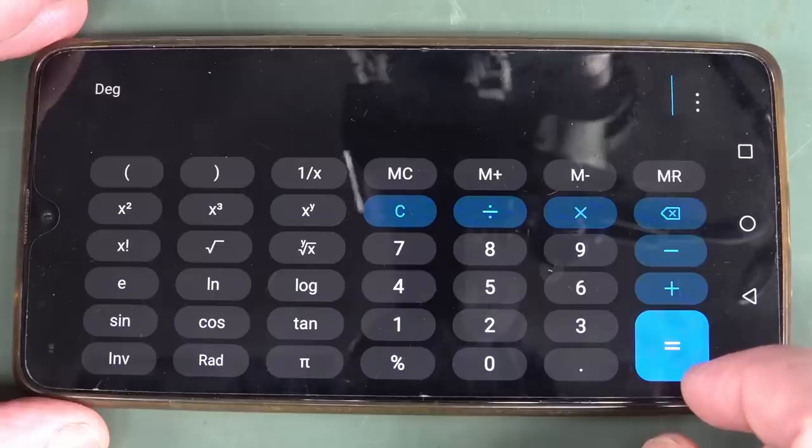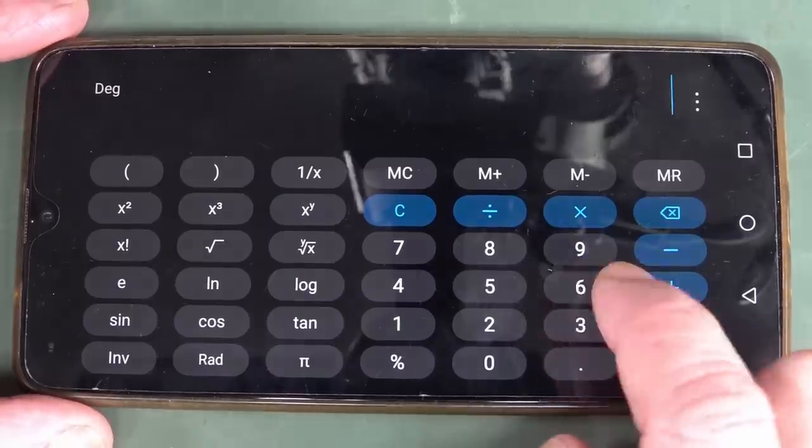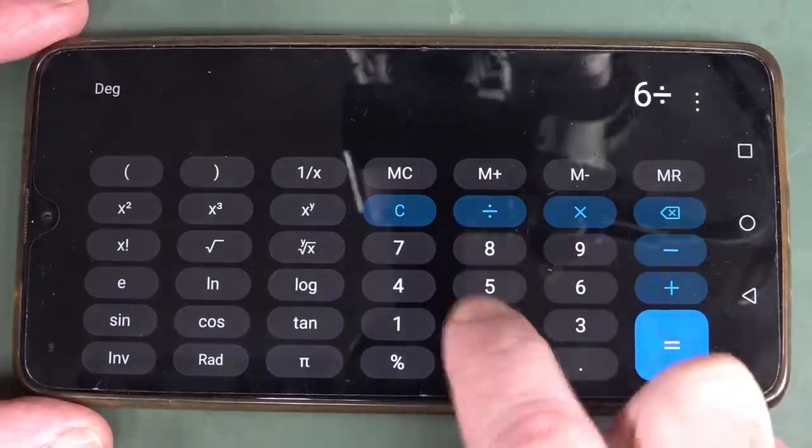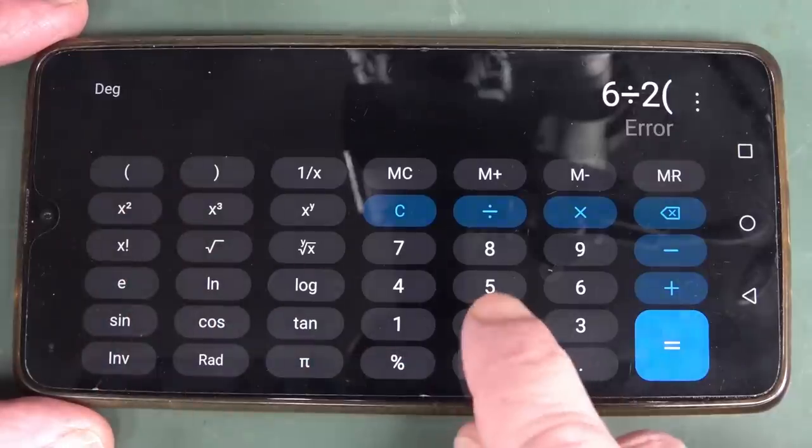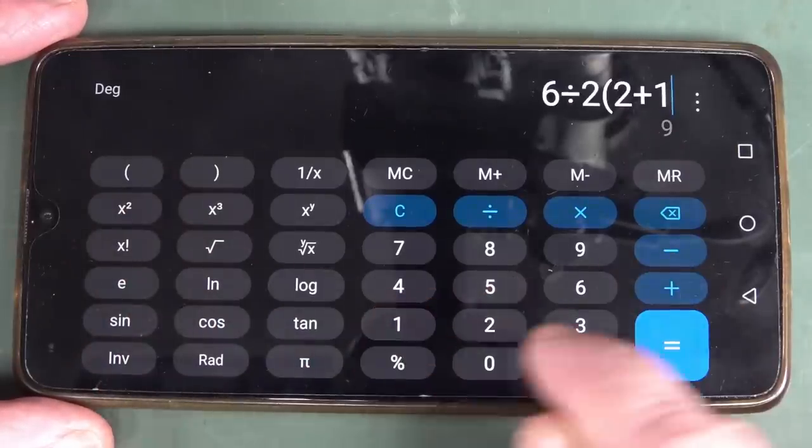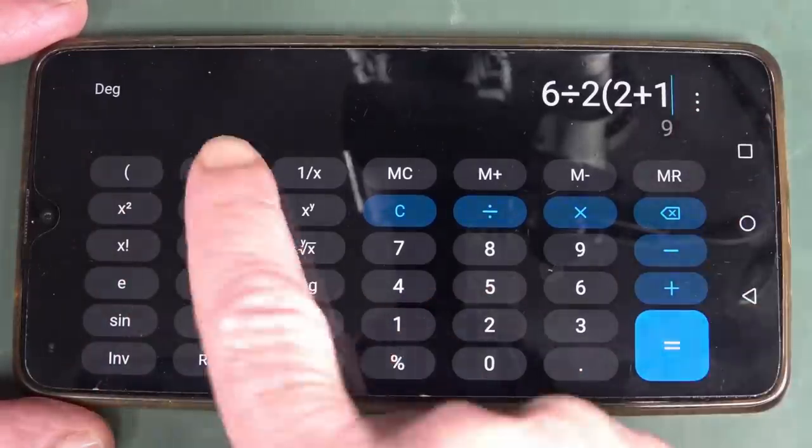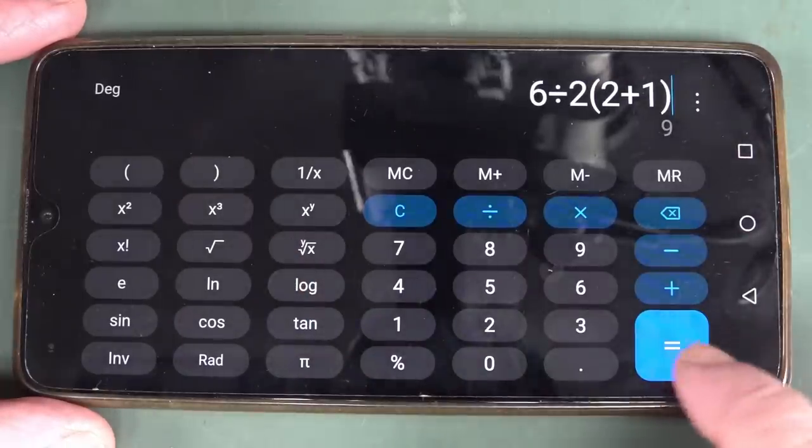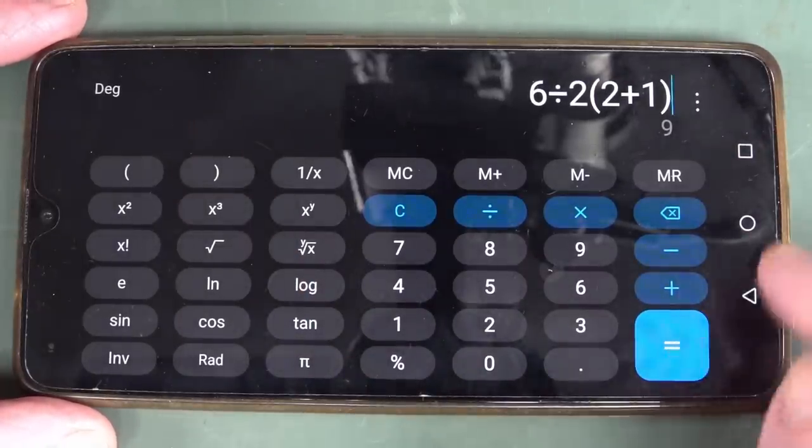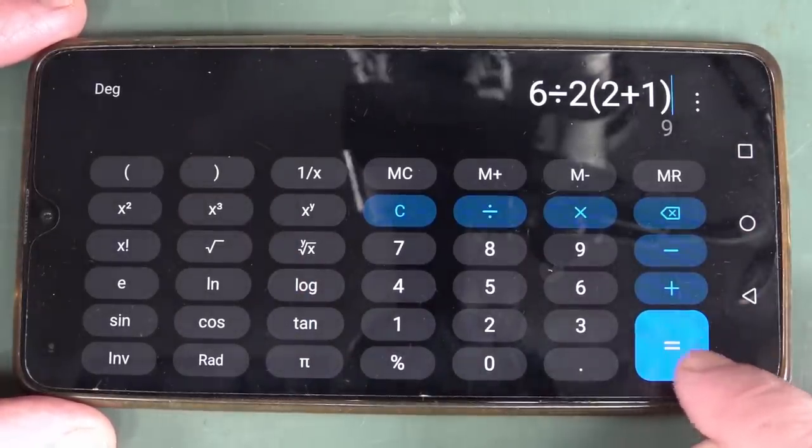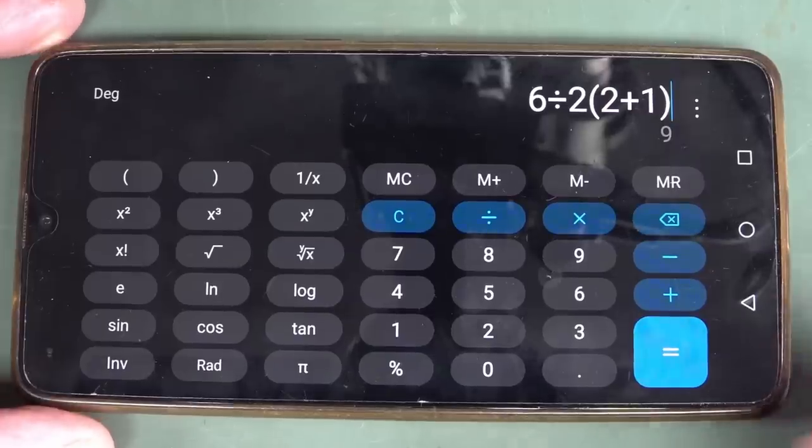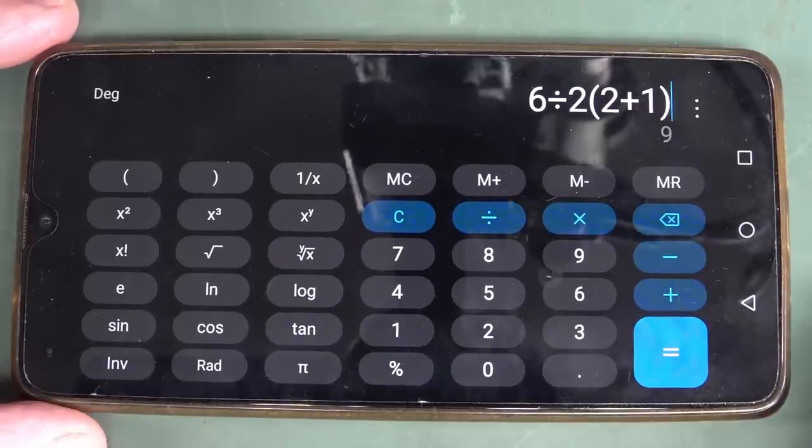What's going on? So let's try that on my Android shoe phone here. 6 divided by 2, parenthesis, 2 plus 1, and it's already given us the answer there, without closing the brackets, it's already given us the answer of 9. So why does the shoe phone not match the Casio calculator?